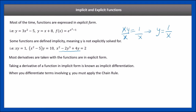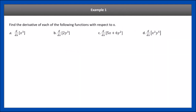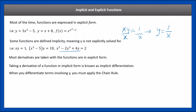When you differentiate terms involving y, you must apply the chain rule. For example, if you have the function square root of x squared minus 1 and you want to differentiate with respect to x, since this is a complicated form inside, we usually replace it with u, where u equals x squared minus 1. You can take the derivative of x squared minus 1, and you can take the derivative of square root of u.